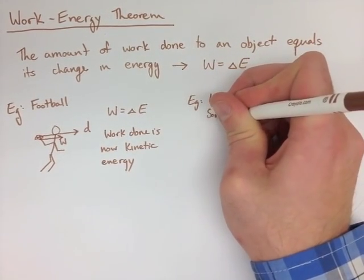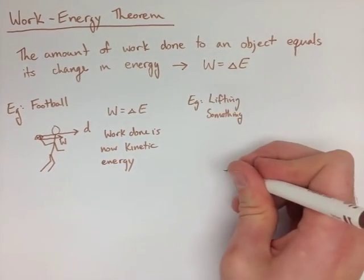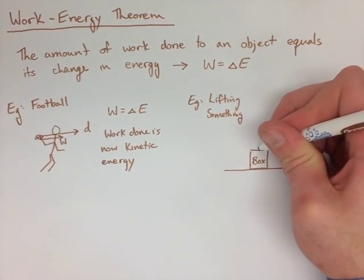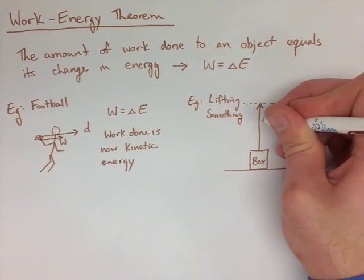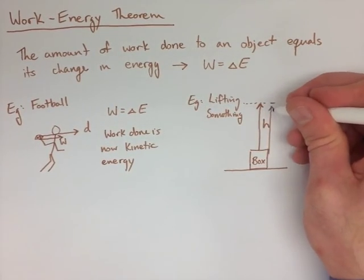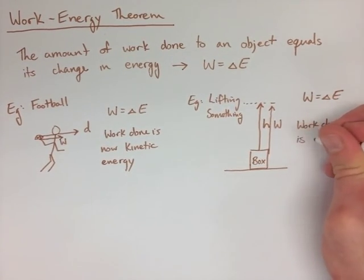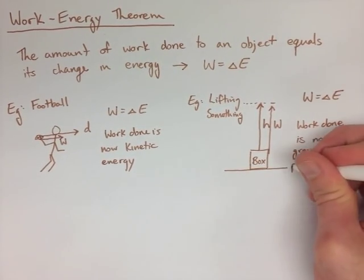The next thing we're looking at is lifting a box. Well, we lift that box up off the ground a certain height. On the ground it's got no gravitational energy, but when we lift it up a certain height, we do work to lift it, and the work turns into gravitational energy. So here the work is now gravitational potential energy.